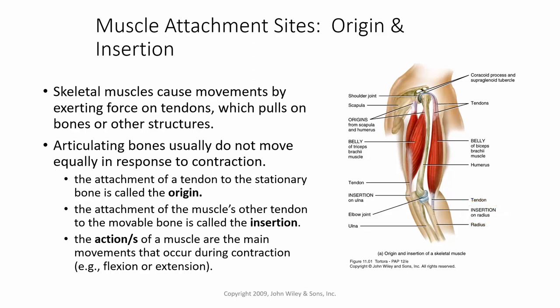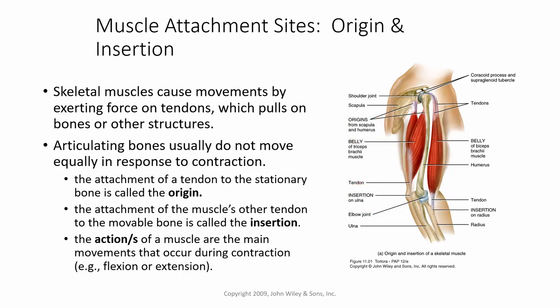The action of the muscle is the main movement that occurs during contraction. We were just talking about flexion; if we go the opposite direction we talk about extension, and we can see the triceps muscle with its origin and insertion. Other actions might be adduction and abduction, or pronation and supination, for example.